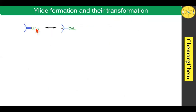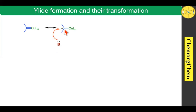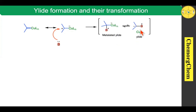Next, we move on to the second application: ylide formation and their transformations. After formation of the copper carbene, we can represent it as having a positive charge on this center and a negative charge on this center. It readily interacts with heteroatoms such as sulfur, nitrogen, and oxygen. Those kinds of atoms have lone pairs of electrons which readily react with the positive center, producing the corresponding ylide. The metallated ylide and the ylide are both present in equilibrium. An ylide means both positive and negative charges are present on adjacent centers.